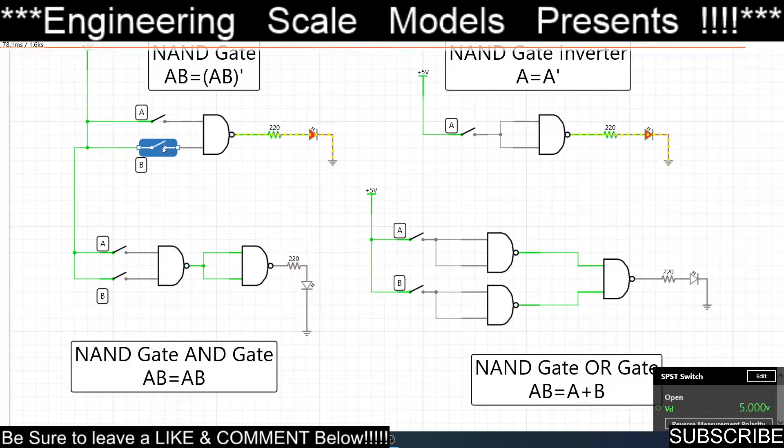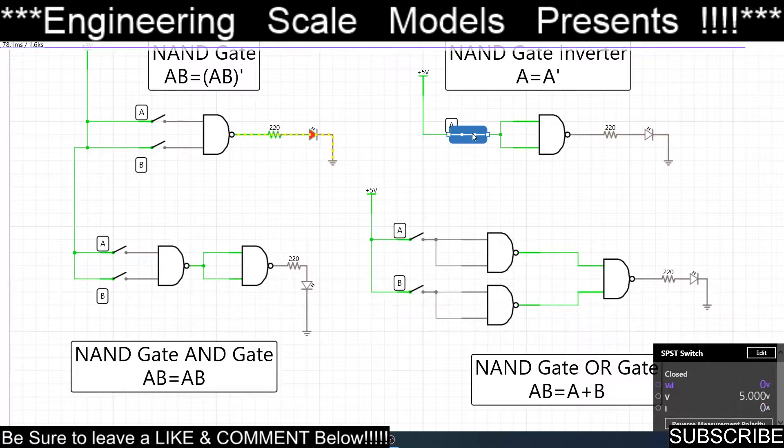If I wanted to make an inverter, I would just tie both inputs together, and now A is zero and it's a one. And now A is a one and it's a zero. So a NAND gate inverter, A equals not A. You just tie them together.